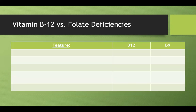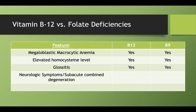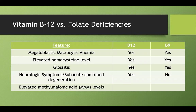Comparing B12 and folate deficiency: both cause megaloblastic macrocytic anemia, elevated homocysteine, and glossitis. However, neurologic symptoms — subacute combined degeneration — occur only in B12 deficiency, not folate deficiency. Elevated methylmalonic acid also occurs only in B12 deficiency, not folate deficiency, because B12 is the only factor involved in converting methylmalonyl-CoA to succinyl-CoA.